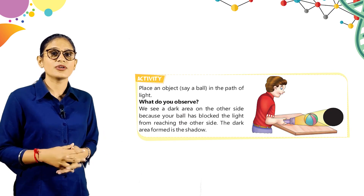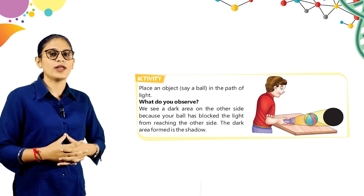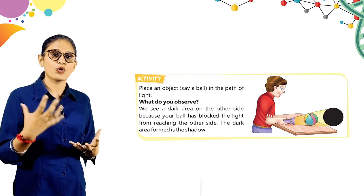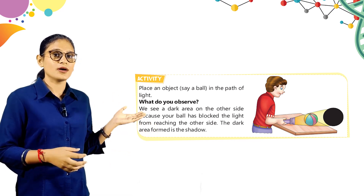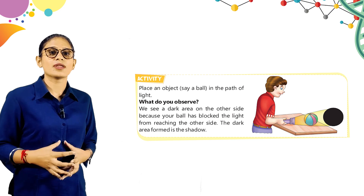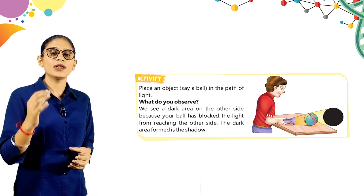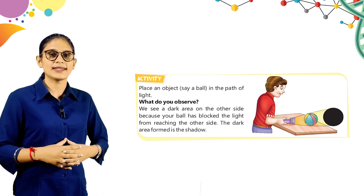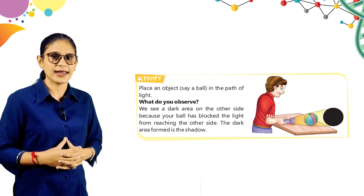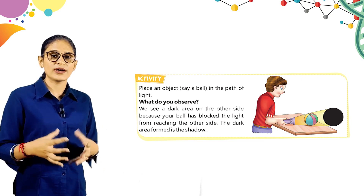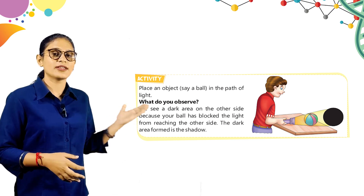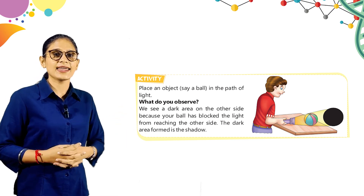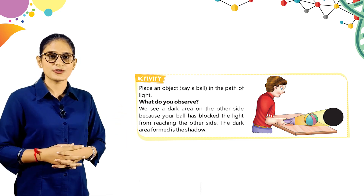Here is an activity. Place an object — a ball — in the path of light. What do you observe? We see a dark area on the other side, because the ball has blocked the light from reaching the other side. When the ball blocks the light, you see a dark area on the other side. The dark area formed is the shadow.